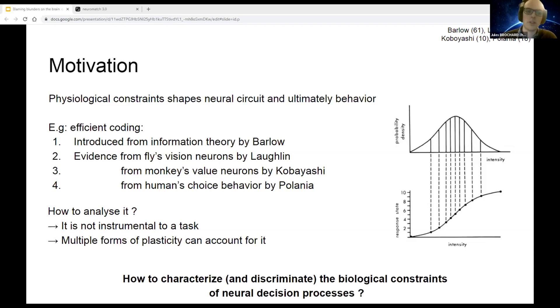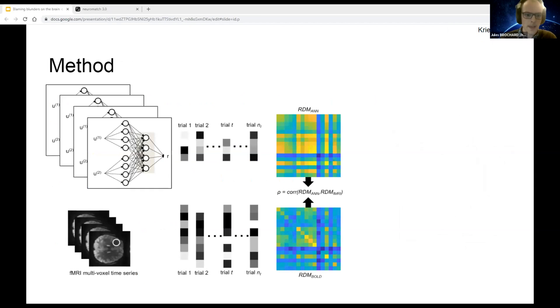I do this through the joint analysis of artificial neural network activity and BOLD signal. I will train a neural network model on the behavior of subjects based on a task, extracting the activity of the units of these neurons and build a similarity matrix comparing trial by trial the activity of each neuron.